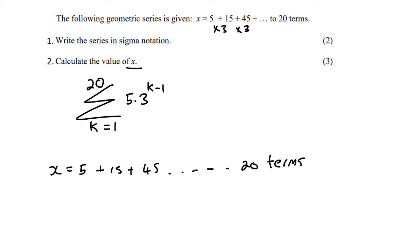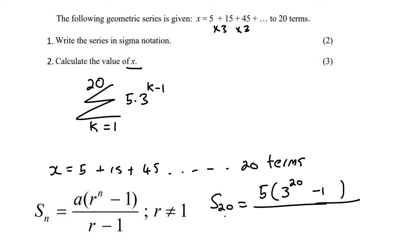So we know that it's geometric. So we can simply use the sum formula of a geometric sequence. And so the sum of 20 terms is equal to a, which is 5. The ratio is 3. 20 terms over 3 minus 1. And if we had to go work this out, we should get a huge number.